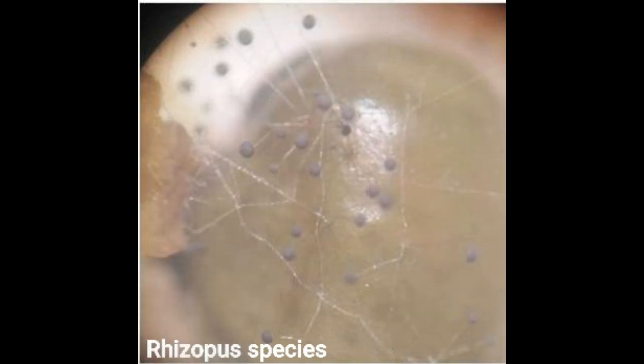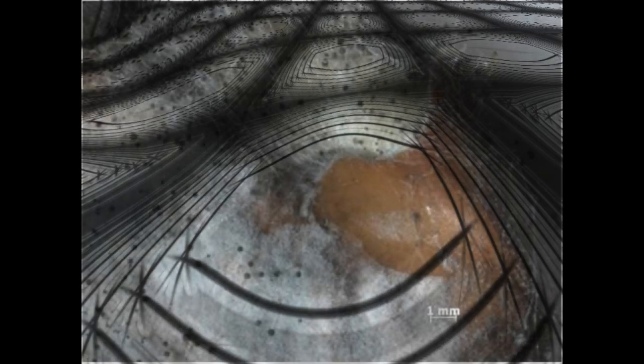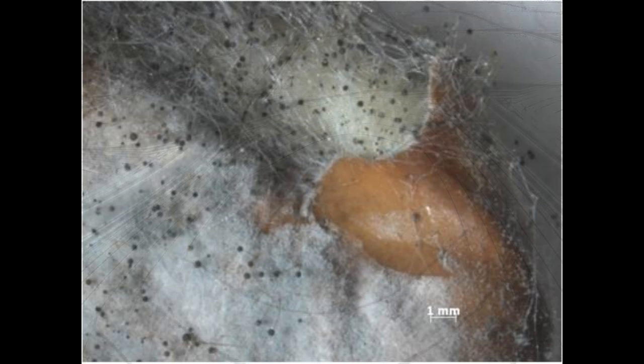The next form is Rhizopus species, which is a saprotrophic fungi, meaning it mainly feeds upon dead and decayed matter. It is found most widely distributed on mature fruits, jellies, syrup, peanuts, and on slices of bread. The different species of Rhizopus are used in the commercial production of fumaric acid and are also employed in the production of various alcoholic beverages.